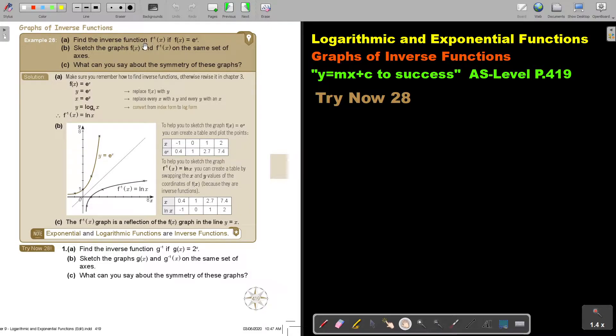Let's look at graphs of inverse functions. Find the inverse of the function, that means f to the power negative 1x, if fx equals e to the power of x. And then sketch the graphs, fx and the inverse, on the same set of axes. What can you say about the symmetry of these graphs? So let's start. Make sure you remember how to find the inverse, otherwise reverse it in chapter 3. I'm going to first make it bigger, see better.